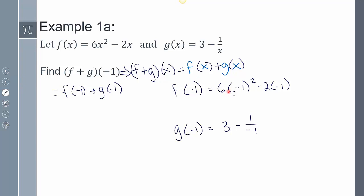So f(-1) is 6(-1)² - 2(-1), and g(-1) is 3 - 1/(-1). Just remember, these represent placeholders and I'm inputting -1 into those placeholders. So now simplifying this, you're going to get 8. Simplifying this, you're going to get 4. So f(-1) + g(-1), we're adding them together, you're going to get 12.